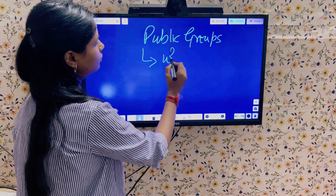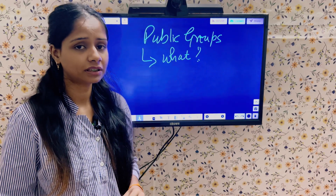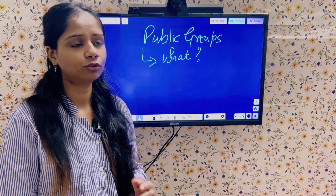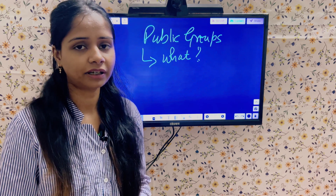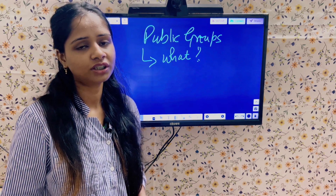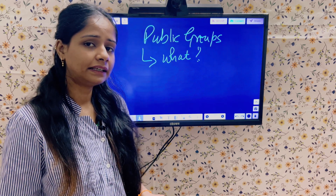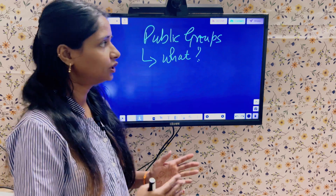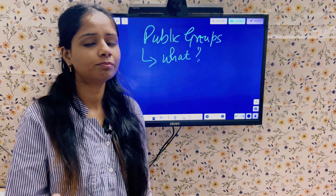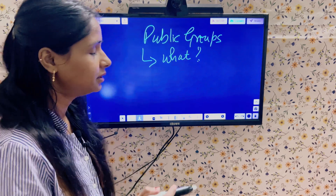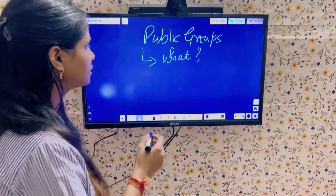So our first point is: what are public groups? A public group is a group of users. If we have two or three users and we want to combine them into one group, we can do that. Public groups are completely different from permission set groups — in permission set groups, permissions are considered, but in public groups, only users are added.